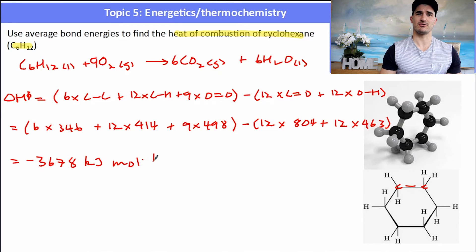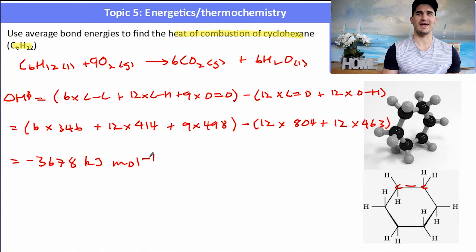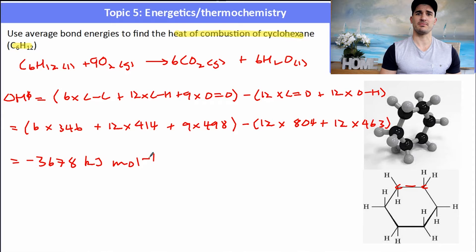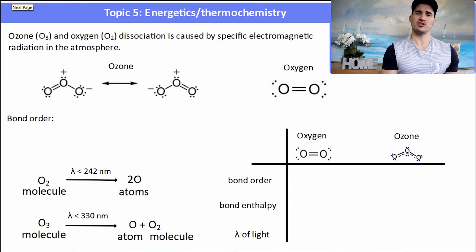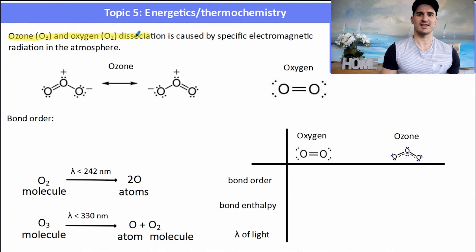This value could be less than the real value because these are average bond enthalpies. If we compare them to the actual value, there will be a difference because the bonds in that specific molecule might be slightly stronger or weaker than the average.